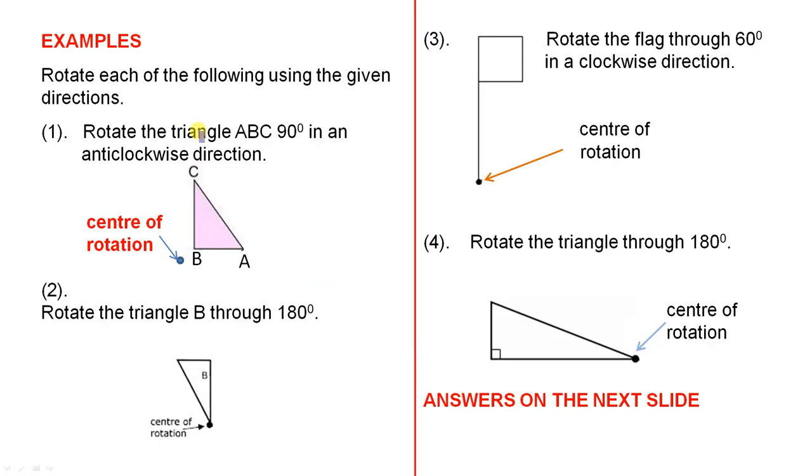So if we look at some simple examples, we'll give four questions here, and you can think about those for a while, and then we'll give the answers on the next slide. So the first one is, rotate each of the following using the given direction. So that triangle there, rotate the triangle ABC 90 degrees in an anti-clockwise direction. So there's your original triangle, there's the centre of rotation. Have a think about how that's done.